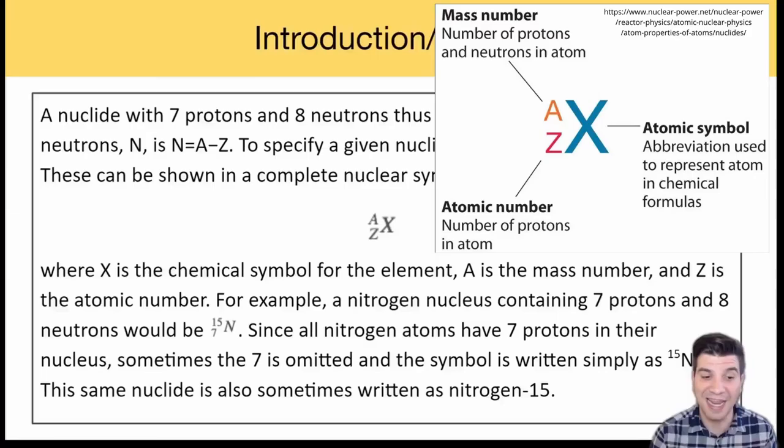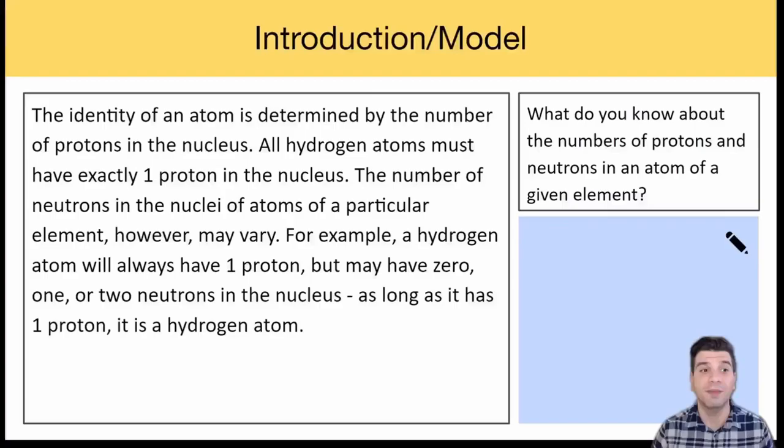To specify a given nuclide, we need to give only A and Z. These can be shown in a complete nuclear symbol which takes the form where X is the chemical symbol for the element, A is the mass number, and Z is the atomic number. For example, a nitrogen nucleus containing seven protons and eight neutrons would be the symbol here, 15 over 7 N. Since all nitrogen atoms have seven protons in their nucleus, sometimes the seven is omitted and the symbol is written simply as nitrogen-15. The same nuclide is also sometimes written as nitrogen-15.